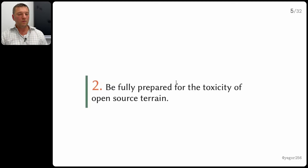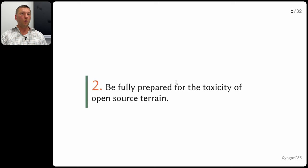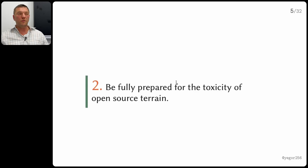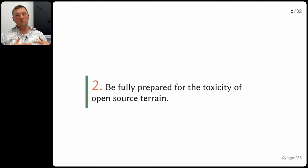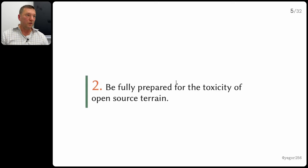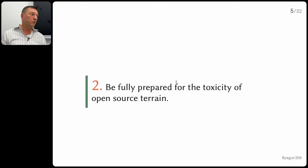Recommendation number two: be prepared for the very toxic nature of open source. Open source is famous for being toxic — it's a way more dangerous environment compared to internal development. When you work in a company, you have a close community of programmers — just a few friends in the room who all know you and respect you to some extent. They're not going to be rude or use dirty language in technical discussions. In open source, it's not true — nobody knows you, nobody cares about you, almost nobody respects you.